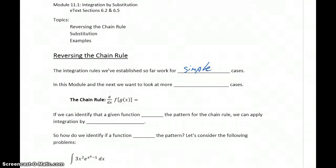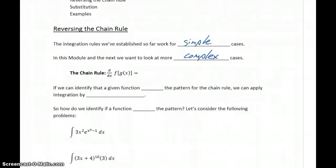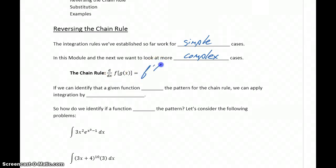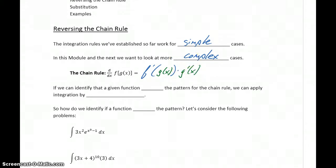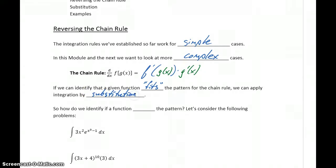The integration rules we've seen were for some of the simple cases; now we want to look at more complex cases. Before we jump into this, let's start with a refresher of what the chain rule says. The chain rule, for taking the derivatives of composite functions, says that if g(x) is some interior function of f, to take the derivative we take f prime evaluated at that interior function and multiply by the derivative of that interior function. If we can identify problems that fit that general pattern, we can apply integration by substitution.